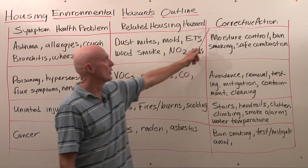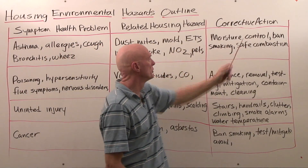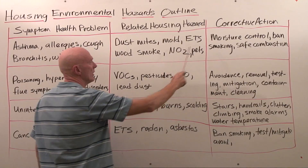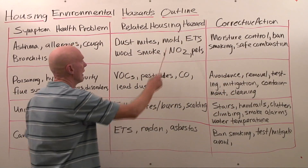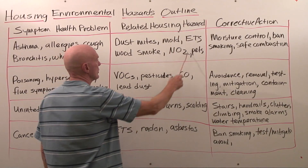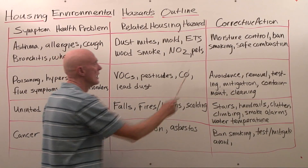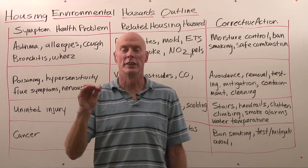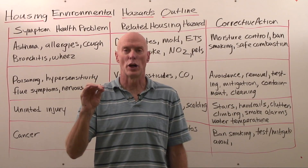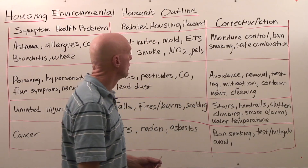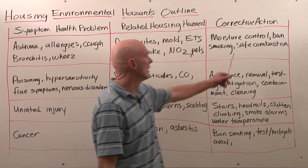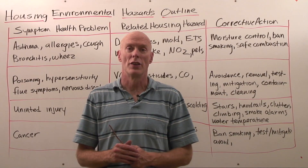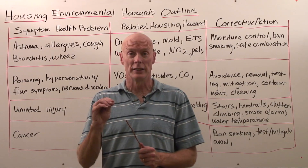For corrective action, one of the most important things we can do is moisture control, because it will eliminate dust mites and mold. We've got to ban smoking indoors to address environmental tobacco smoke and oxides of nitrogen. We've also got to make sure our combustion processes are safe — avoid unvented space heaters and ventless fireplaces. We want safe combustion and should test our combustion venting systems to ensure products of combustion are vented to the outdoors.